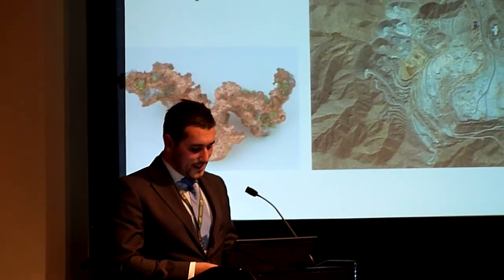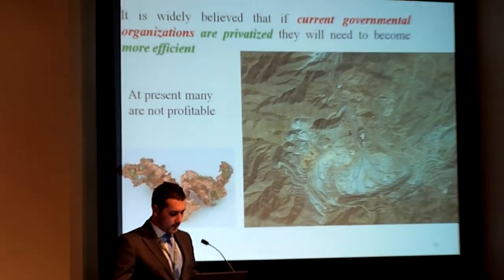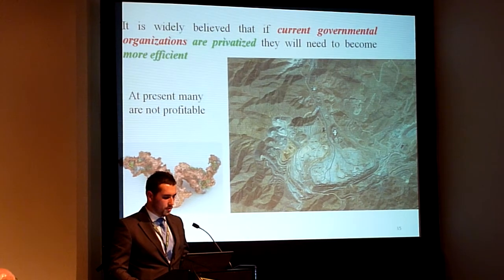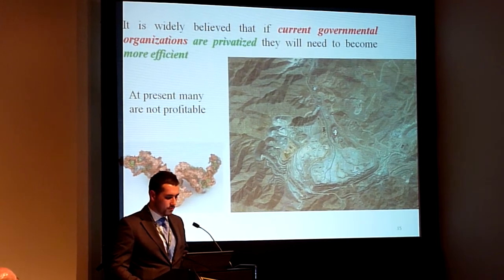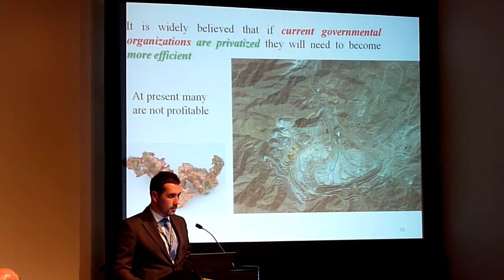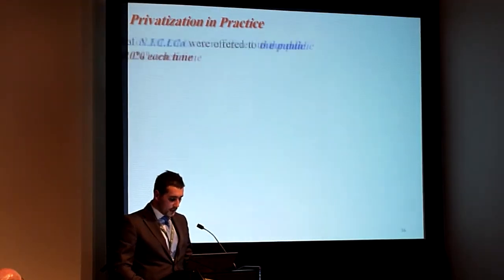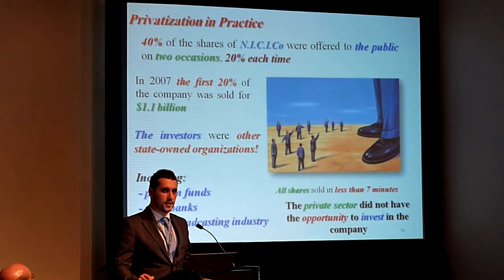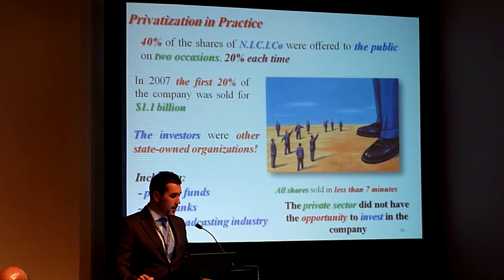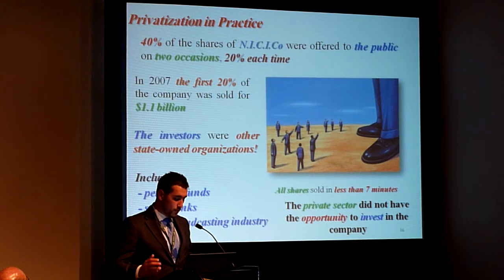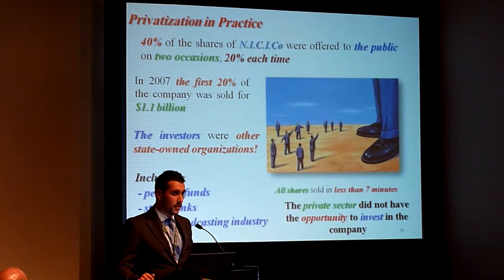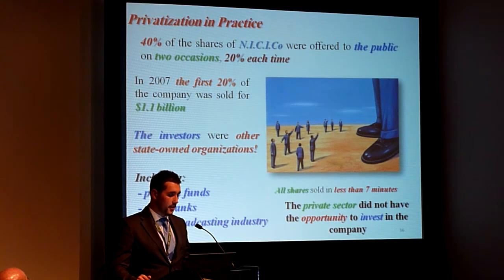We believe that a systemic problem exists in the way in which government entities have been privatized, so much so that most of the privatization program procedures are being done very inefficiently. NICDI Code itself is a good example of this. 40% of the shares have been decided to be allotted to the public, 20% of which were allotted to the public in 2007 and were sold for 1.1 billion. However, these were sold to other state-owned entities, and they were all sold in seven minutes.